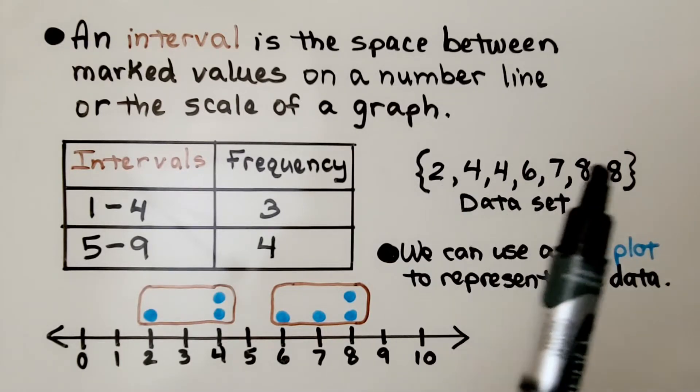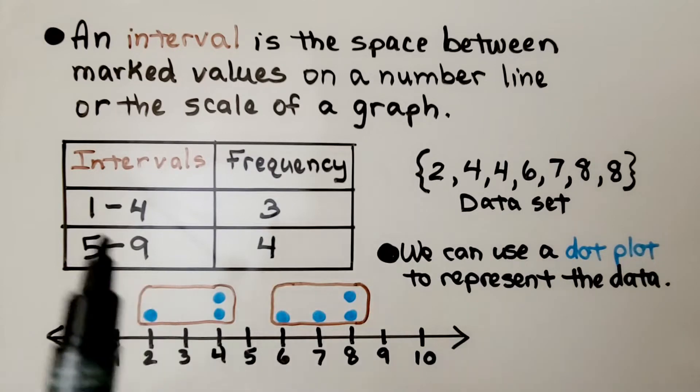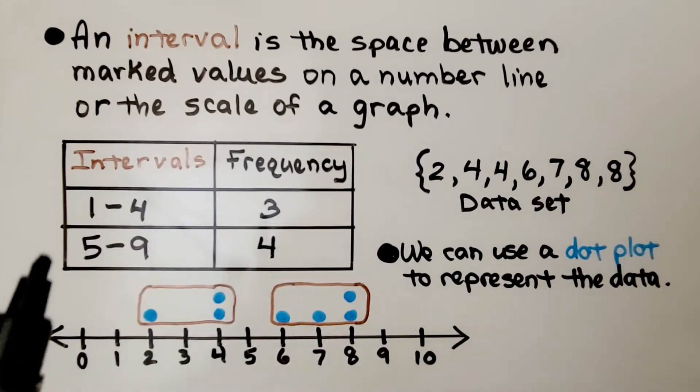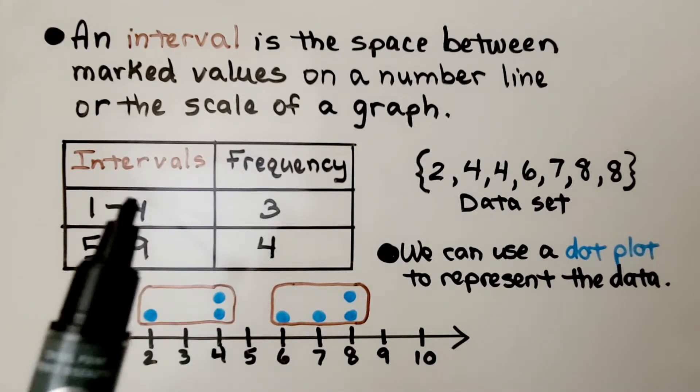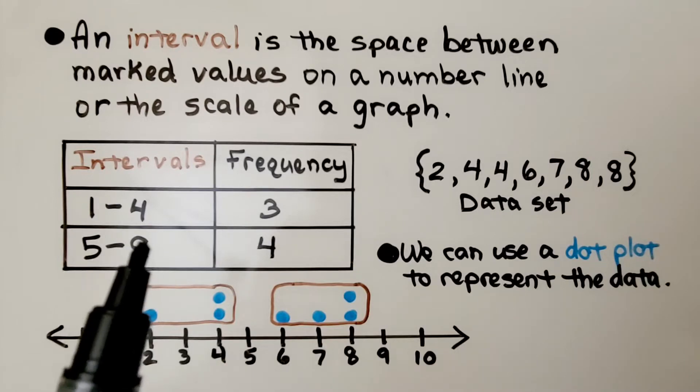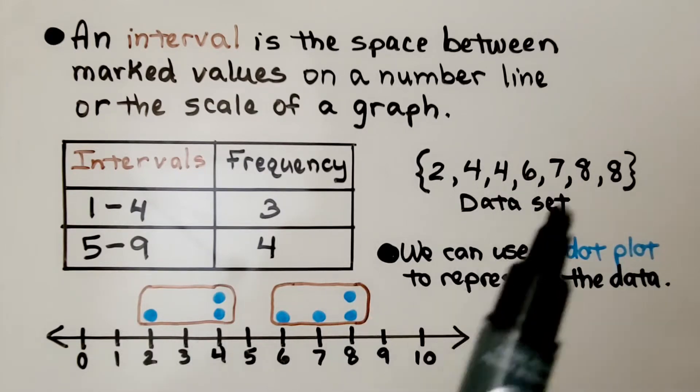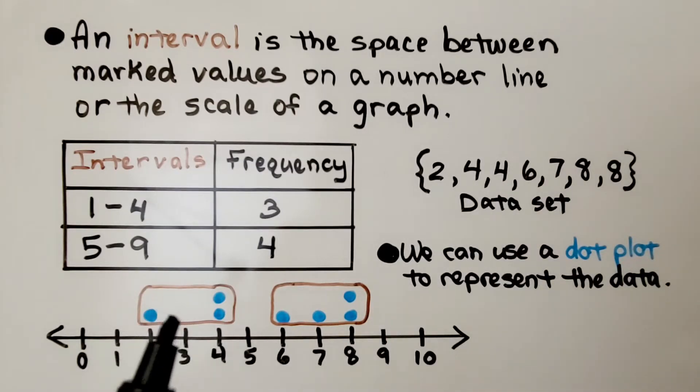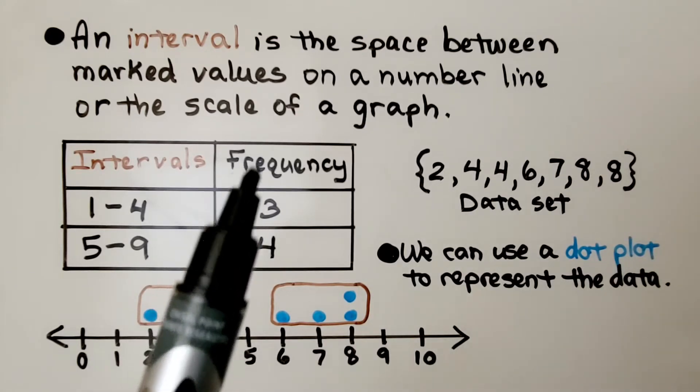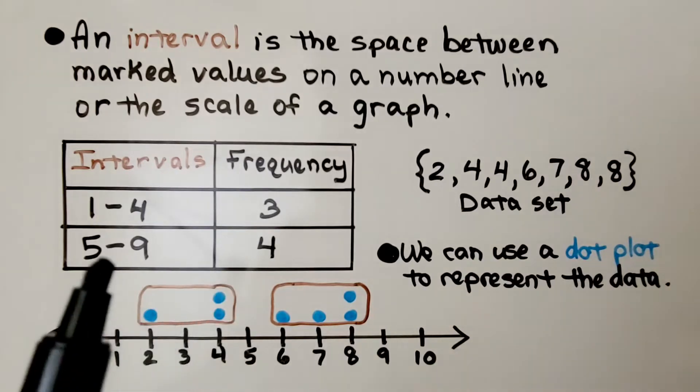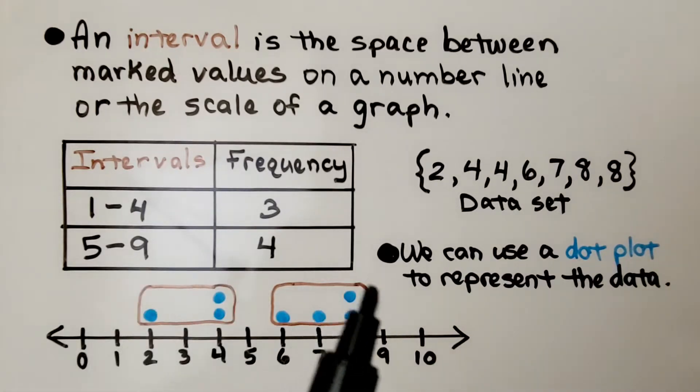Here we have a data set with some data values, and here we have a frequency table. It's telling us the intervals go from 1 to 4 and 5 to 9. We can use this dot plot to represent the data. We make a dot for each data value. In the interval from 1 to 4, there are 3 values, so there's a 3 under frequency. For the interval 5 to 9, we have 4 values, so there's a 4 for frequency.